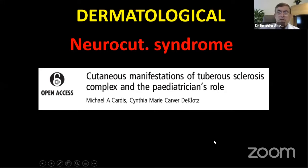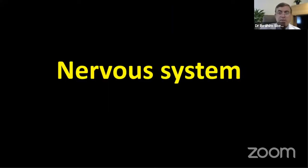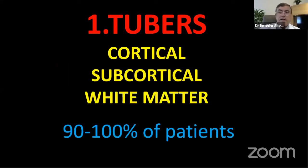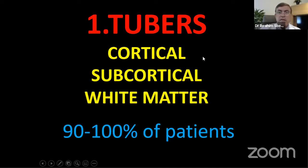Regarding nervous system manifestations, the main ones are: tubers in the cortex or subcortex, subependymal nodules, and the main tumor — the SEGA, subependymal giant cell astrocytoma. Cortical, subcortical, and white matter tubers affect 80 to 90% of patients, so they should be identifiable on careful imaging.